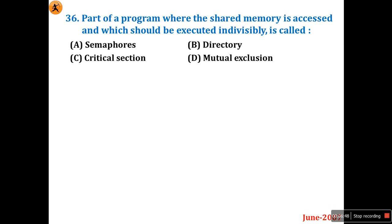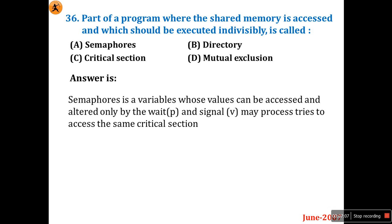Question 36: the part of a program where shared memory is accessed and which should be executed individually — is it semaphore, directory, critical section, or mutual exclusion? The answer relates to a critical section, but semaphore technique uses wait and signal to control access. A semaphore is a variable whose value can be accessed and altered only by wait and signal operations. So option C, critical section, is the right answer.